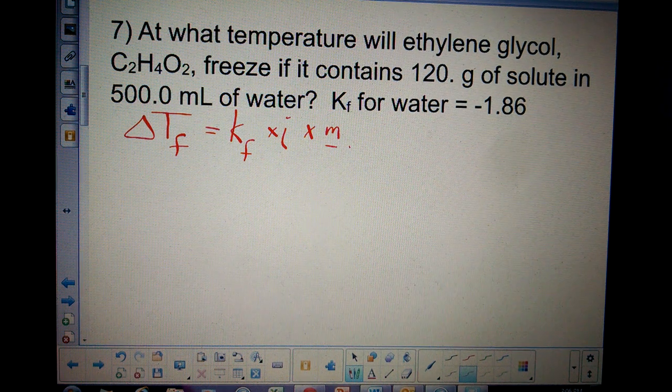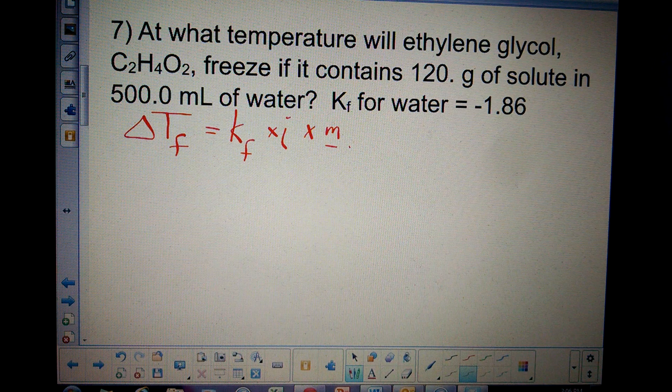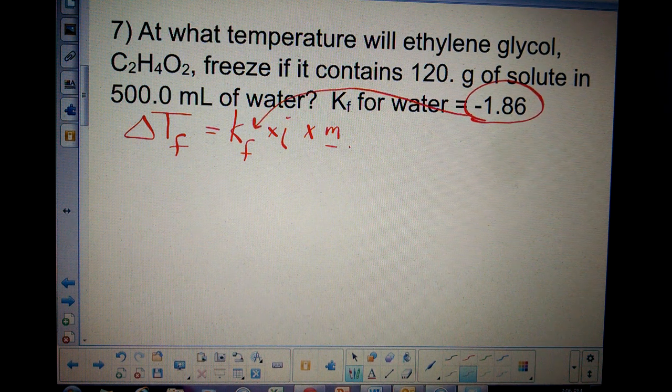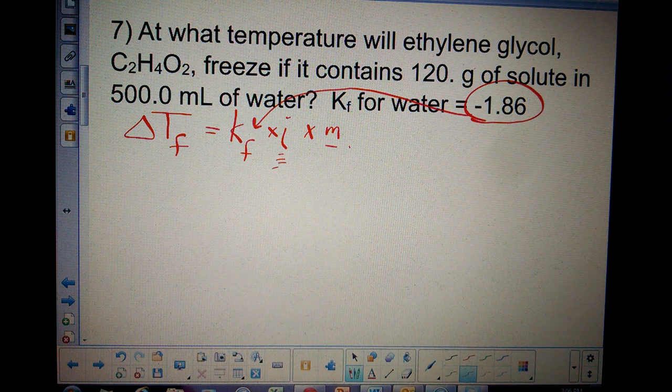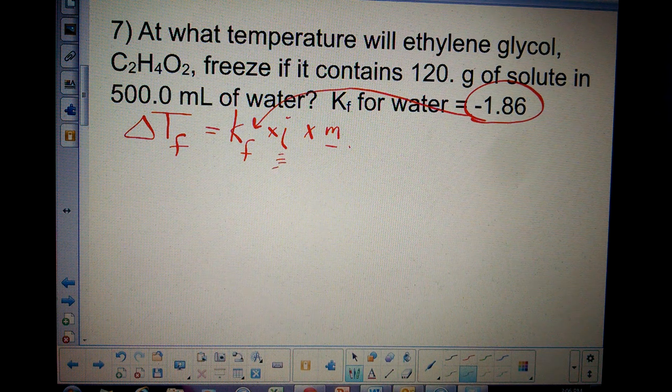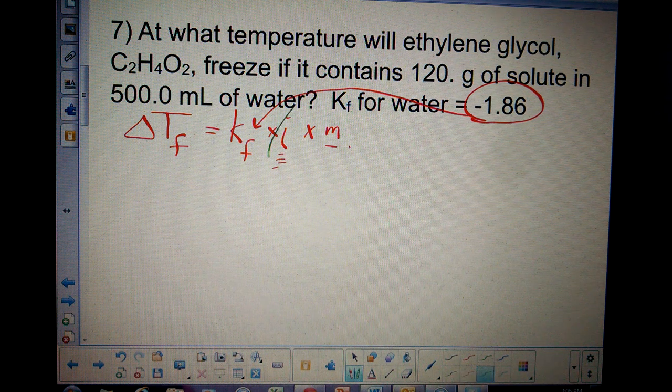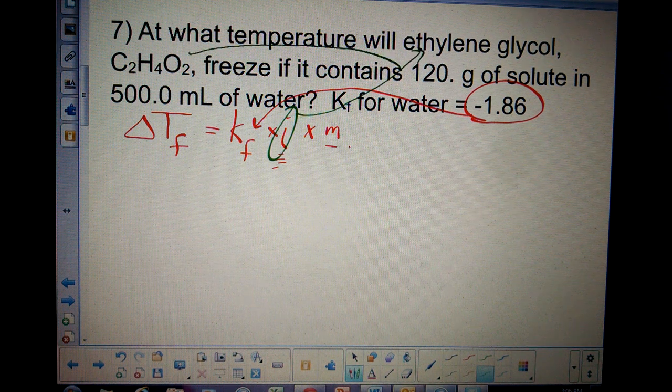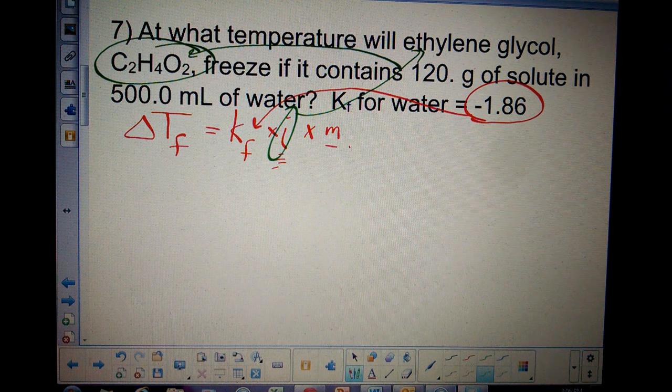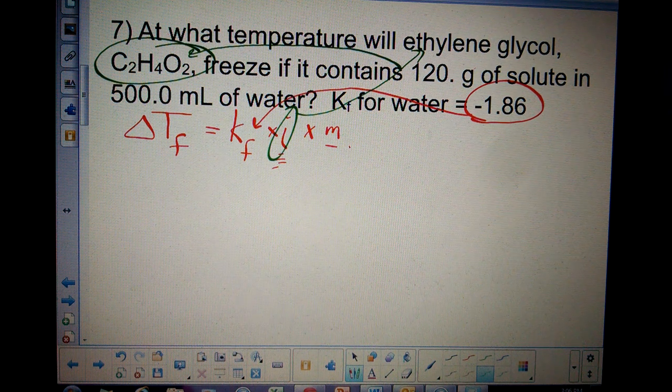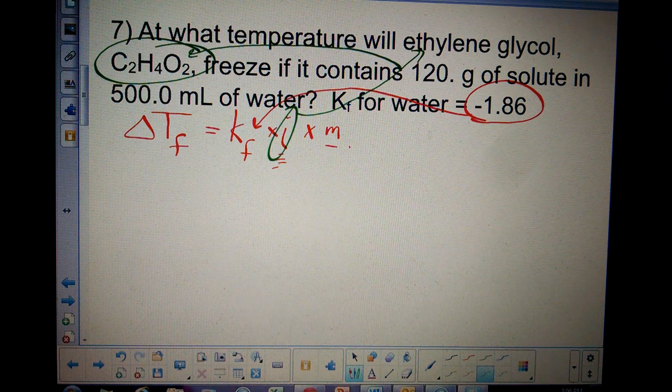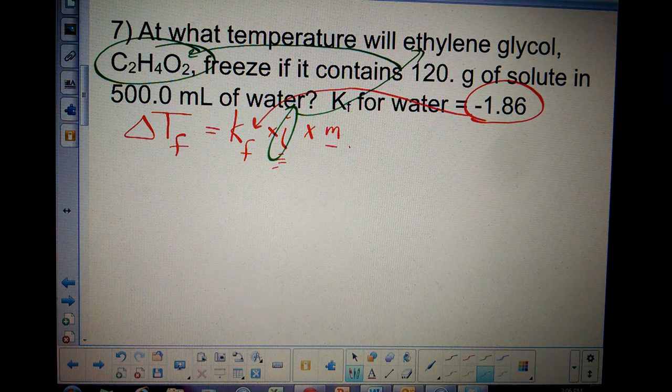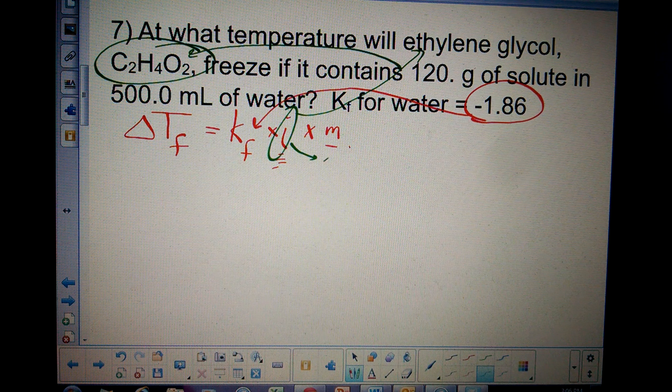A couple of these variables are pretty straightforward. For instance, Kf is just that. The I value is for the solute, and the solute is ethylene glycol, C2H4O2. That is not an ionic compound. Only ionic compounds can have an I value greater than 1. In this case, the I value is going to be just 1.